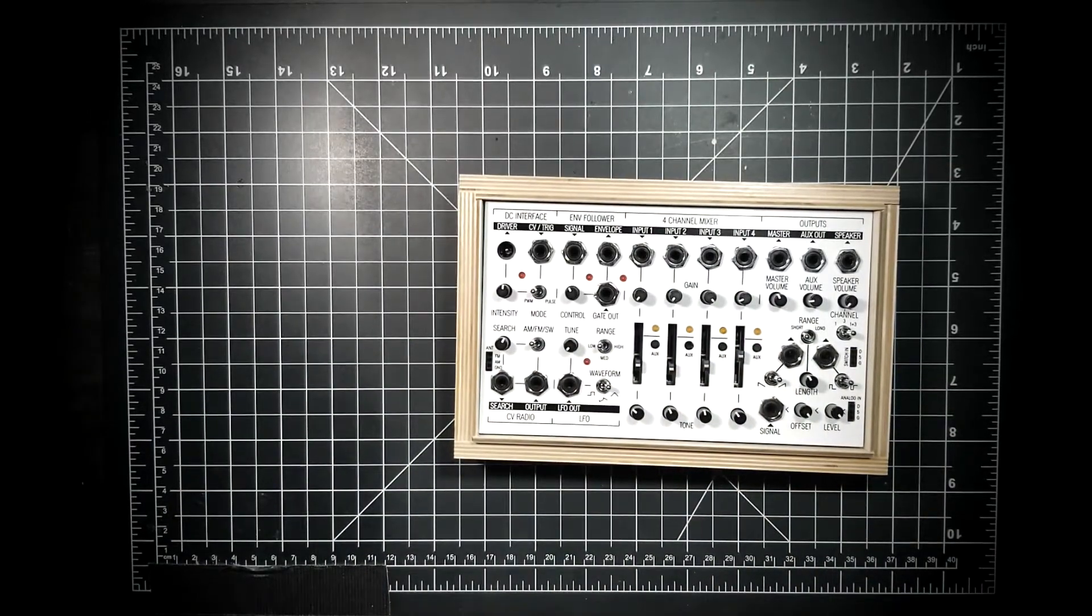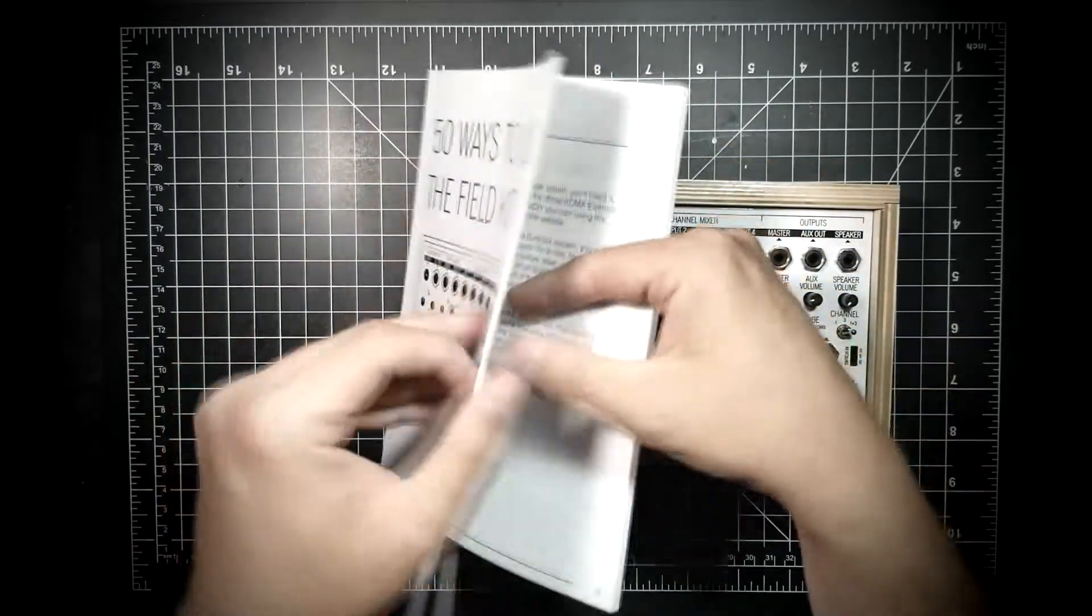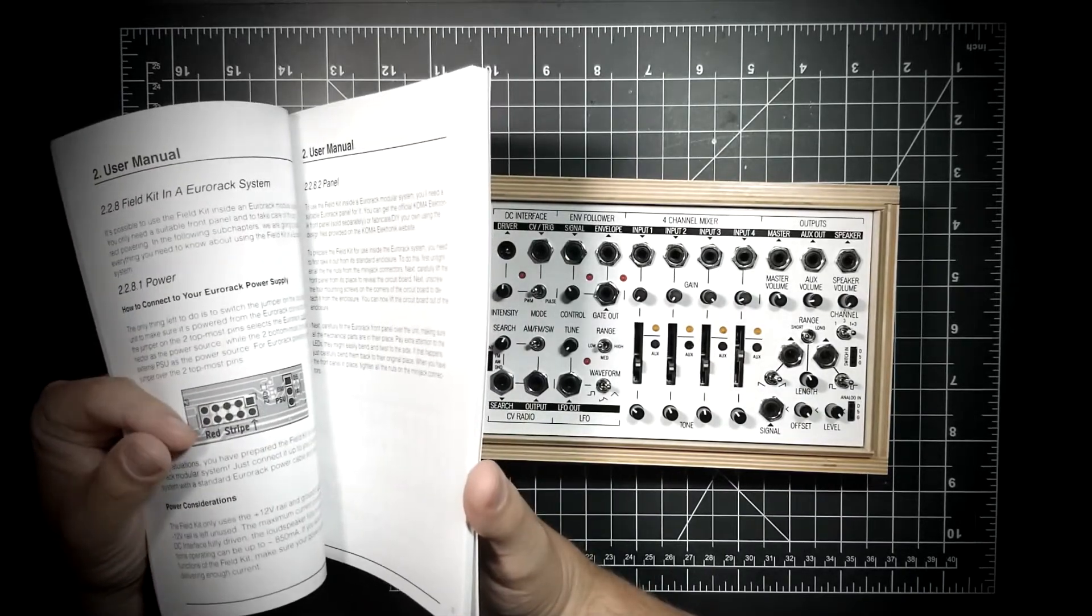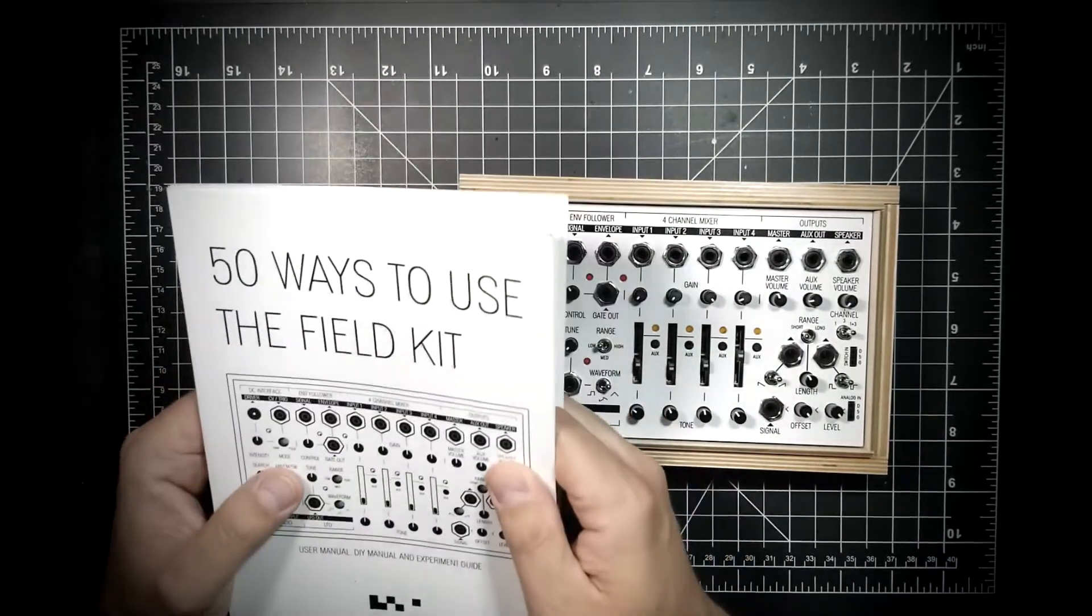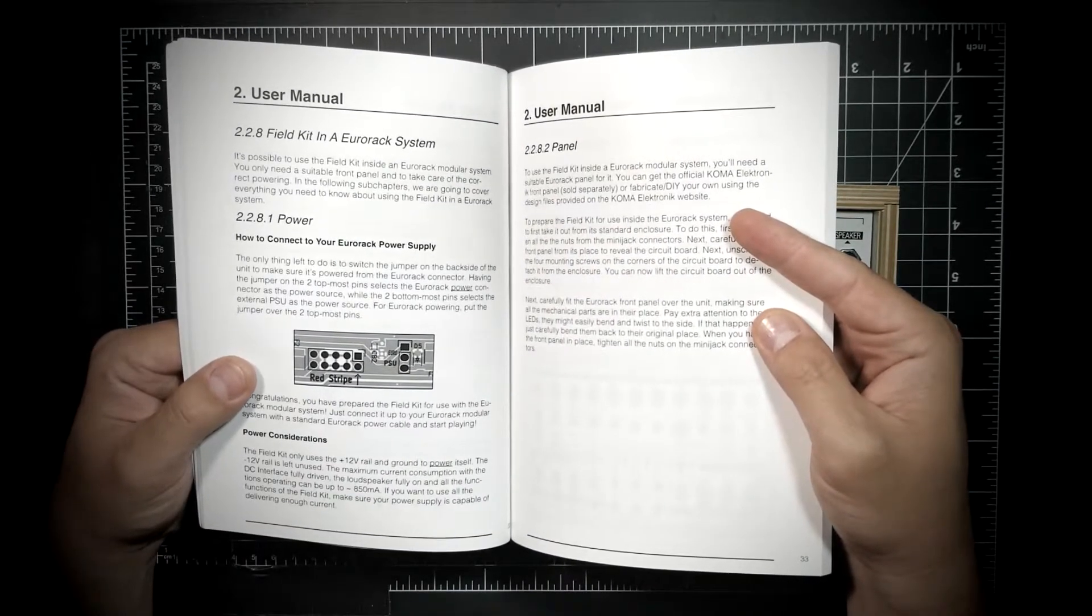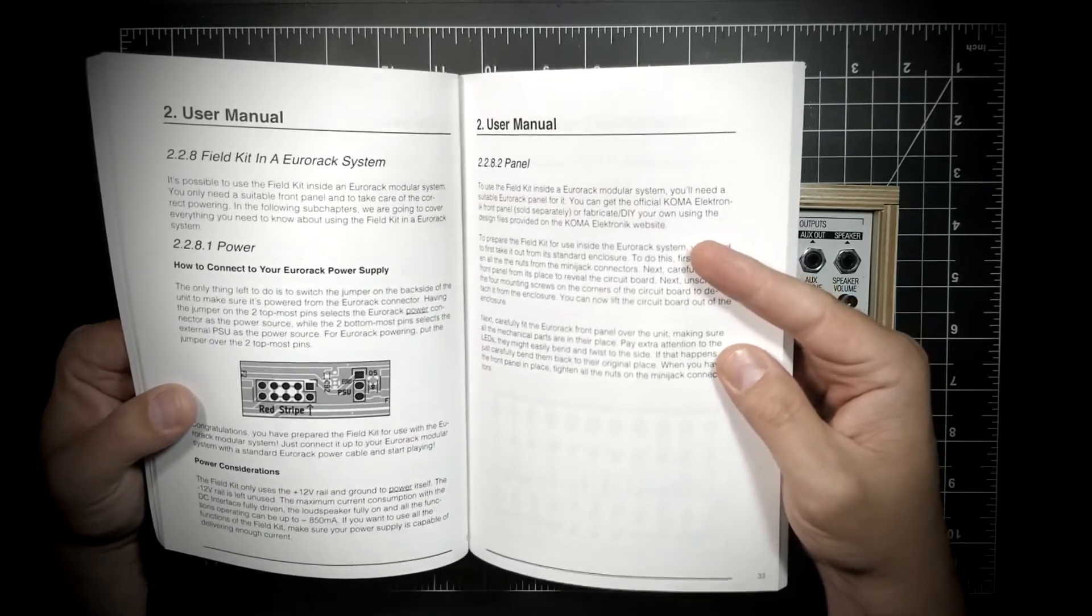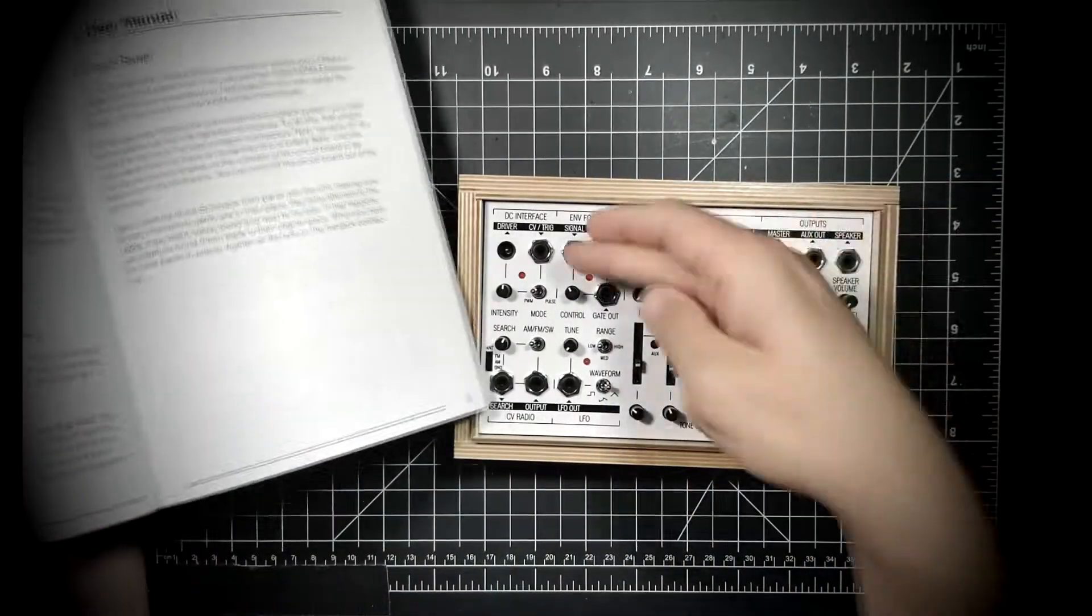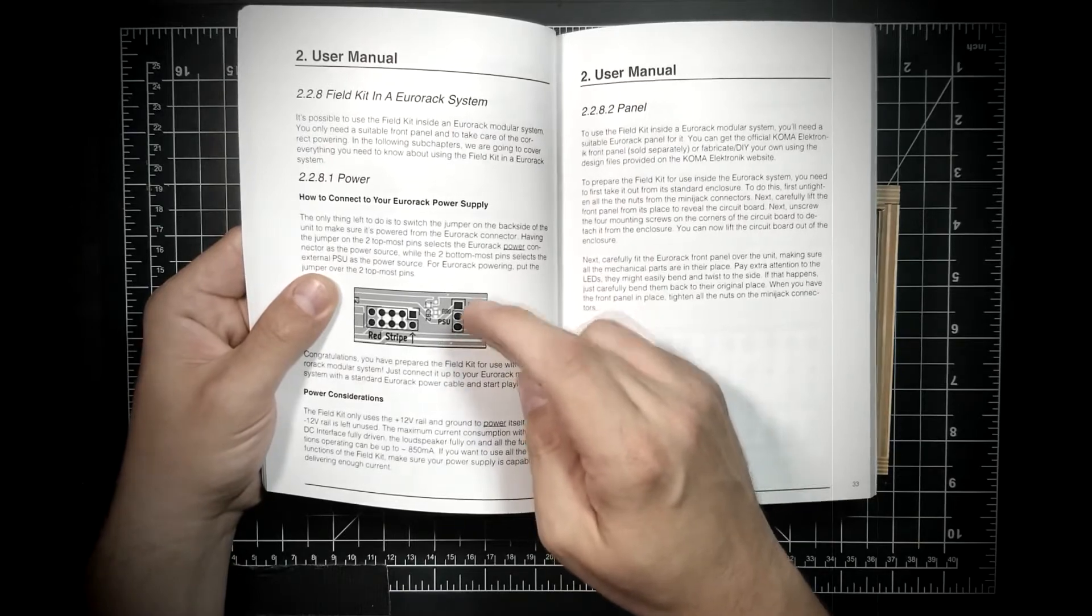Now, the Field Kit comes with a really nicely made instruction manual. 50 ways to use the Field Kit. It pretty much goes through all of the functions on the front panel, as well as 50 different patching ideas. So just think of this video maybe as a companion piece, just to get you an idea of what you might be doing and just how things will look on the inside. So we're going to keep this handy because there is a change you need to make on the back of the unit regarding power supplies.